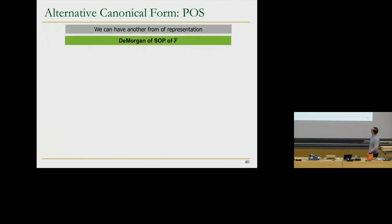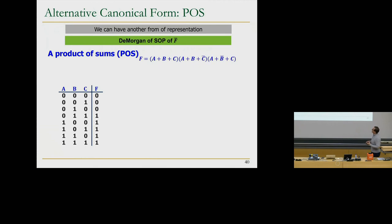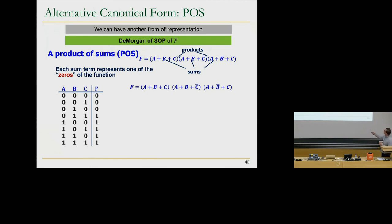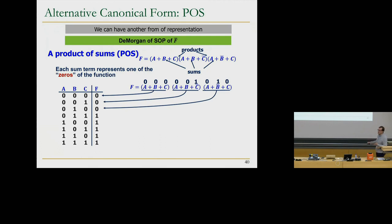Product of sums form is the De Morgan of the sum of products form of F-bar. You start with the zero output values — before we started with ones for sum of products. You enumerate them as sums (OR terms). For example: this function is zero if A is 0, B is 0, C is 0; zero if another combination is zero; etc. You AND all those sum terms together. If any of them is zero, you get a zero on the output. Each sum term represents one of the zero outputs.